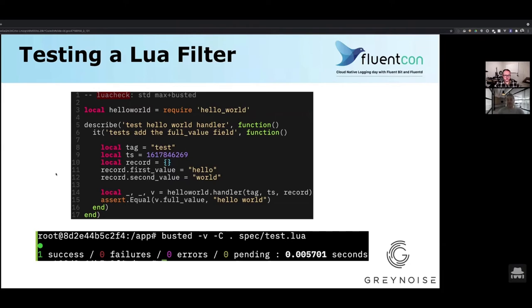You can configure this with your configuration management. You write your FluentBit config, write your Lua script, and now you have tests. You can actually wrap this into a really nice CI workflow that not only ships your code but gives you confidence that it will work. Busted is a really cool framework that complements the Lua filtering setup.